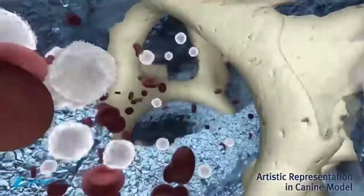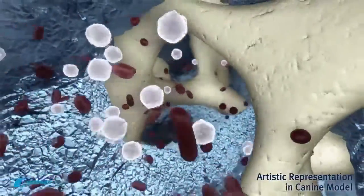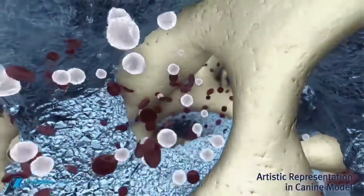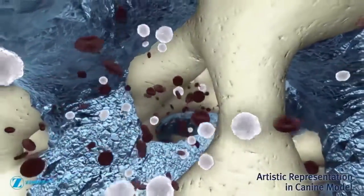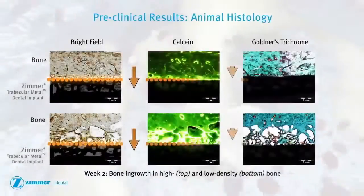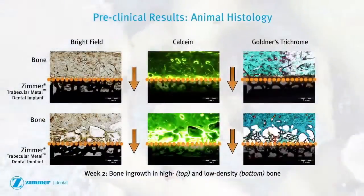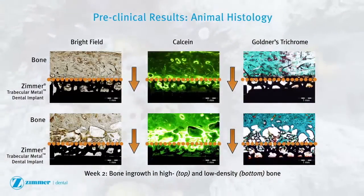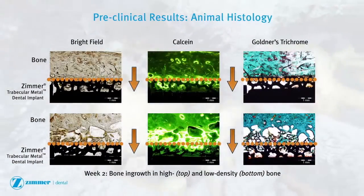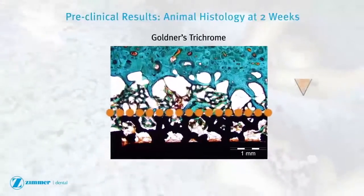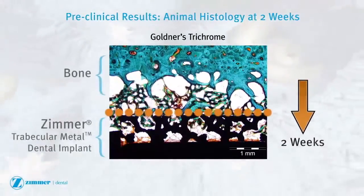Bone has the potential to not only grow into the pores and around the struts, but also onto the nano surface of the struts. In a study of trabecular metal implants placed in canine mandibular models, evidence of ingrowth by maturing bone has been documented as early as two weeks after implantation.